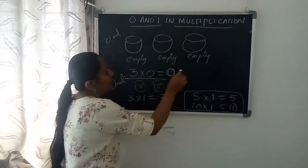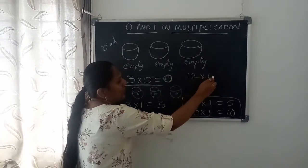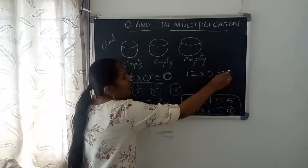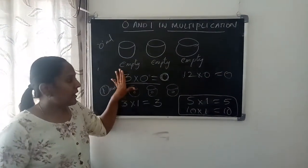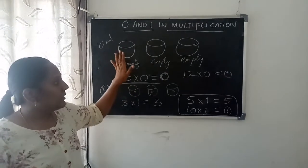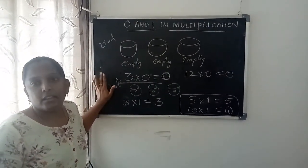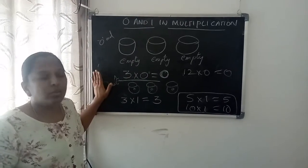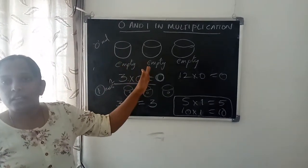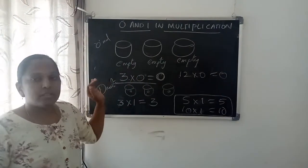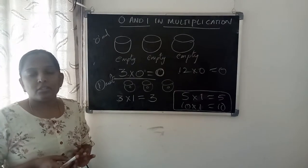Coming to zero: if you multiply any number with zero, the answer is zero only. Remember these two rules. Understand this concept. Tomorrow I will give exercises related to zero and one multiplication. Today you need to understand this, and I will give you six and seven tables. Write the tables neatly in your notebook and practice the six and seven tables.